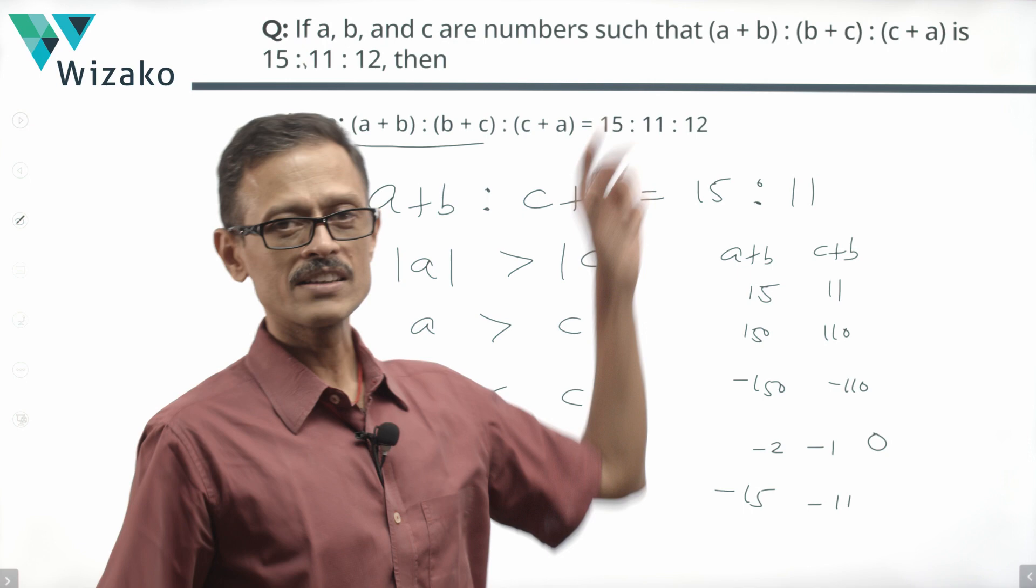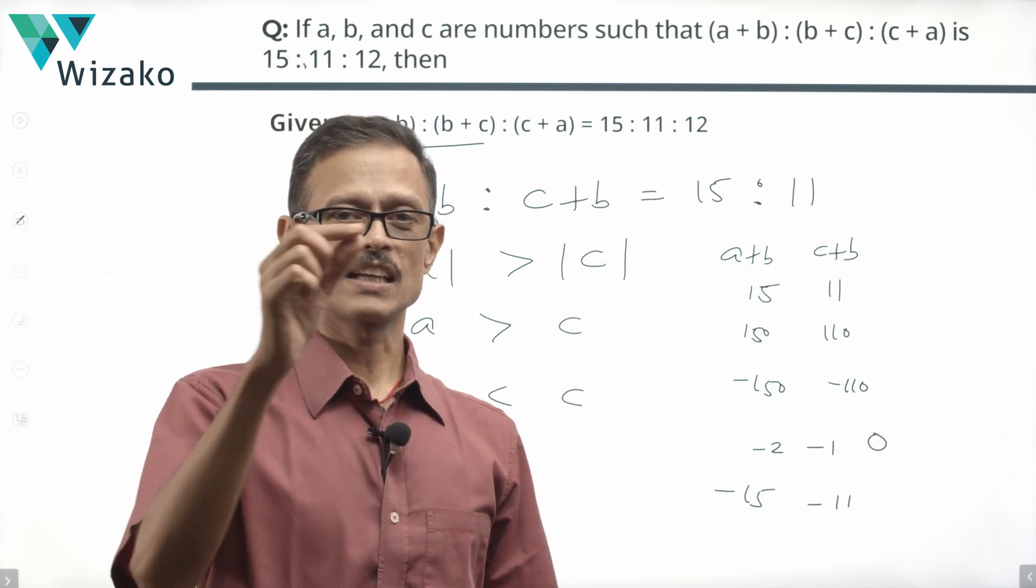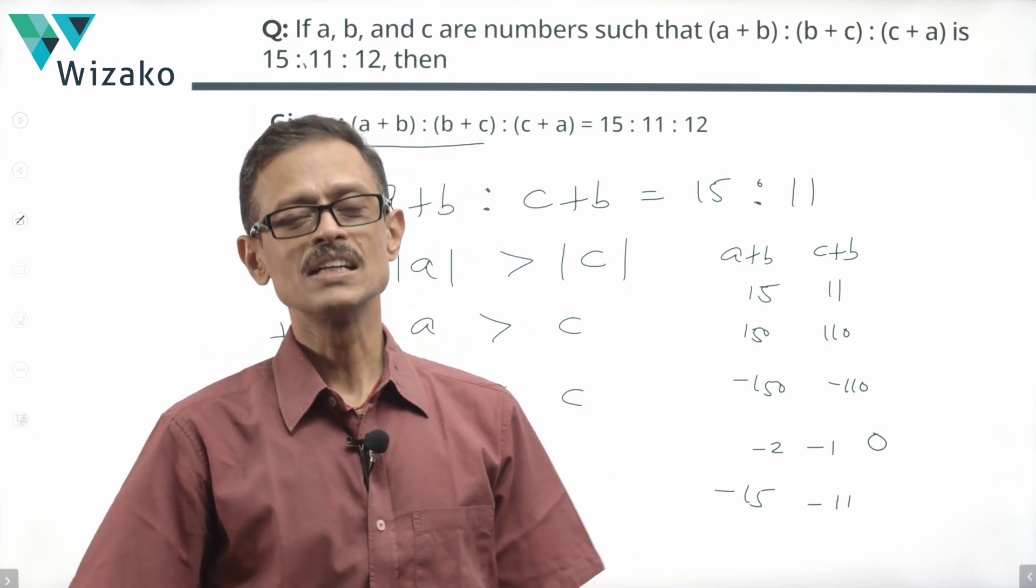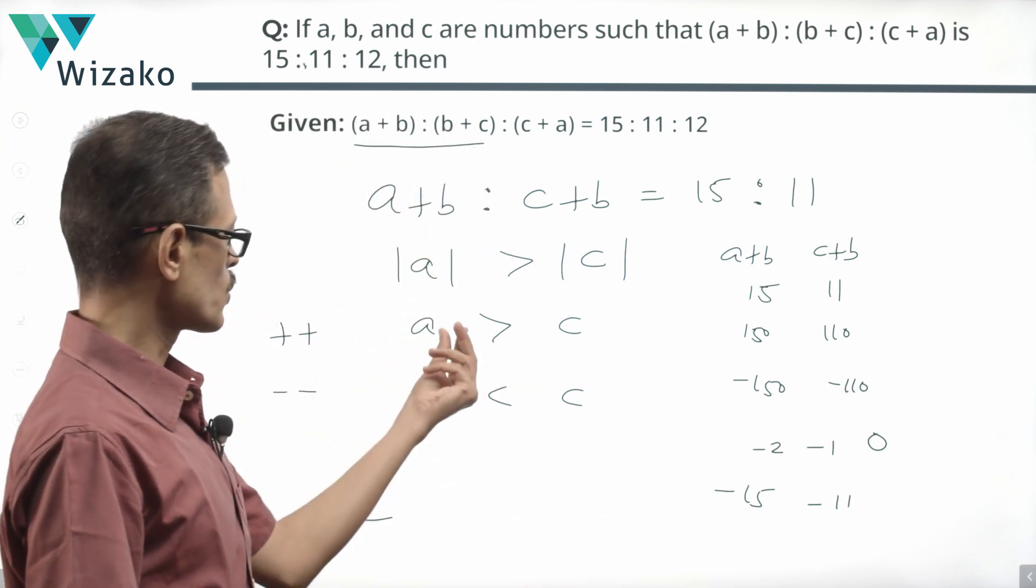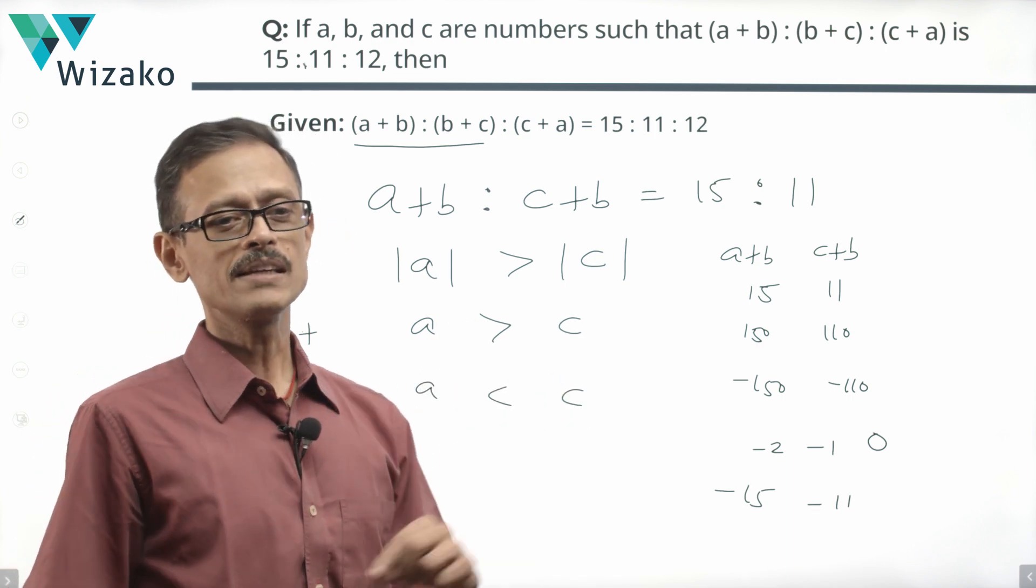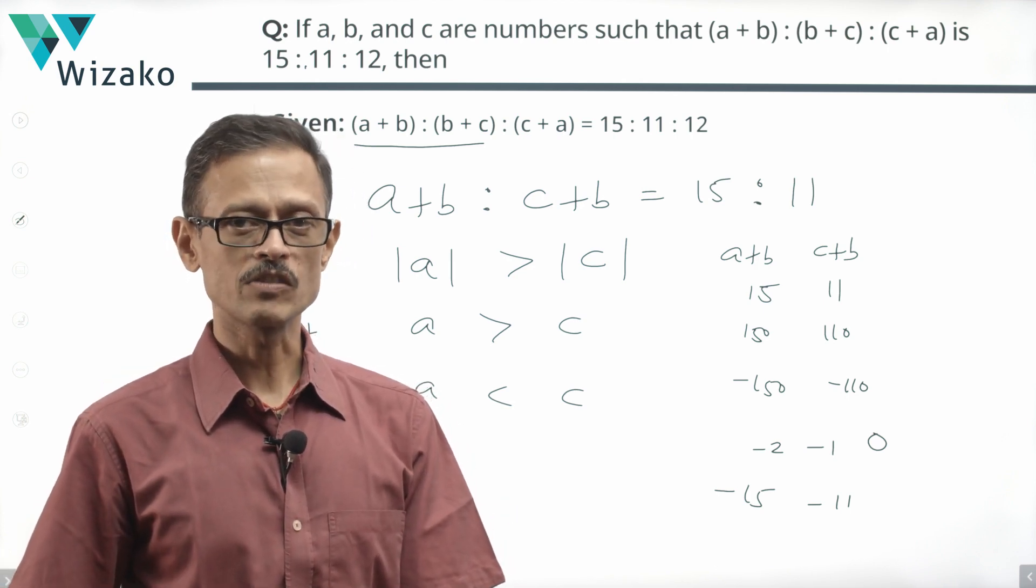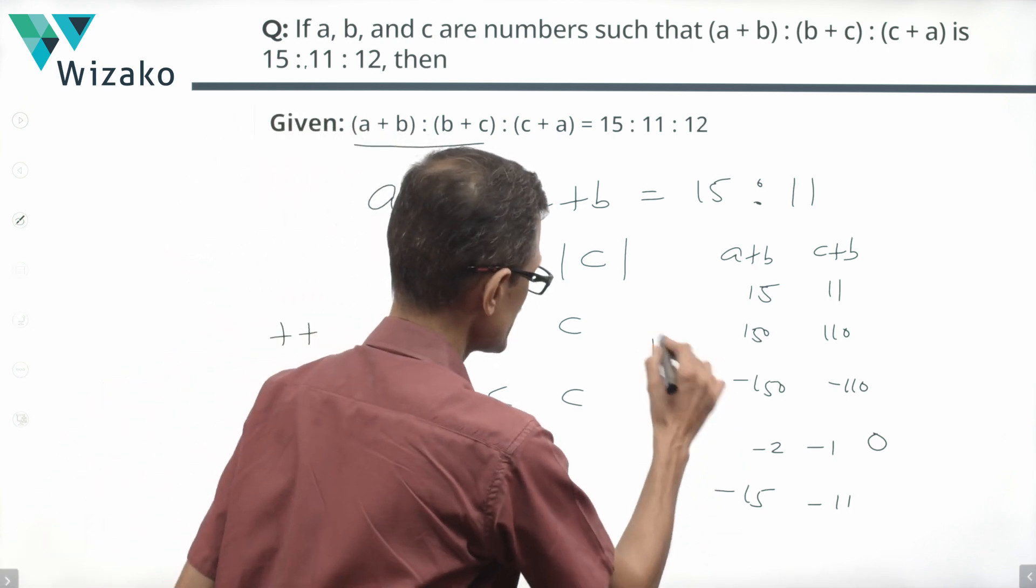From the information given in the question, all that we know is that a, b and c are numbers. We do not know whether they are positive numbers or negative numbers, which essentially means that it could end up being a being greater than c or it could end up being a less than c. So which of these two quantities is greater? We are not able to determine based on the information given. So choice D is the answer.